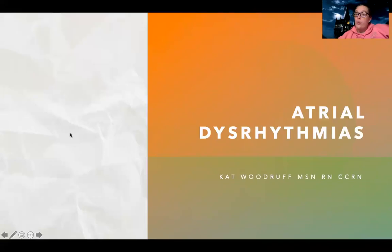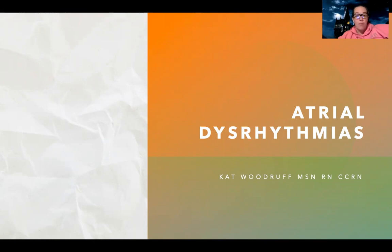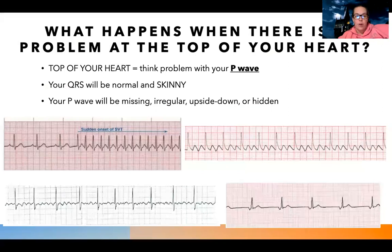Now that we're getting into the world of dysrhythmias, we've learned what's normal, so now we need to learn what's abnormal. We're going to start with talking about when there's problems with the top of your heart. Remember the top of your heart is your atrium, so we're going to talk about abnormal heart rhythms that start from the top of your heart.